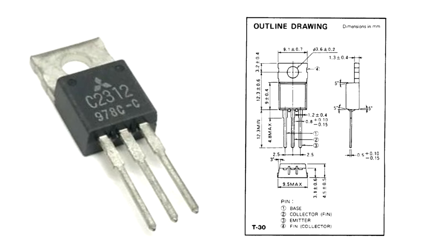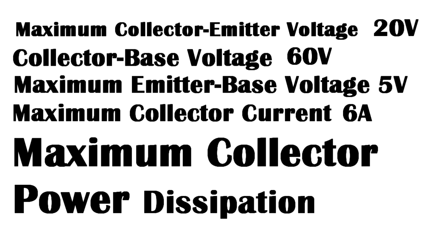It's available in TO220 package and its ratings are as follows: Maximum collector base voltage 60V, maximum collector emitter voltage 20V, maximum emitter base voltage 5V, maximum collector current 6A, maximum collector power dissipation 1.5W.